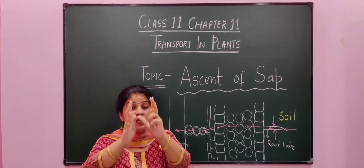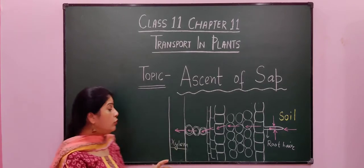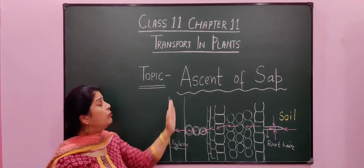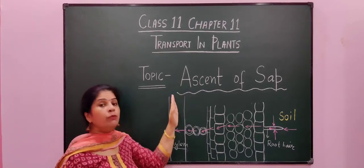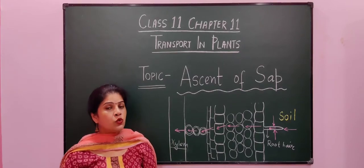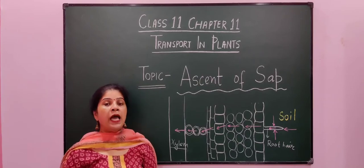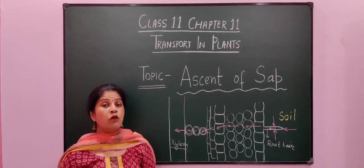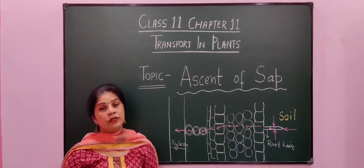This water present in the root hairs will move through various pathways like apoplast pathway or symplast pathway and it will reach up to the xylem. It will move through various cells like cortex cells, endodermic cells, pericycle cells and then reach the xylem part of the roots. This movement of water from the soil solution into the xylem of the roots is known as absorption of water. Now long distance transport of water will take place — the water in the lower part of the plant body will move upward. This upward movement of water is known as ascent of sap, and today's topic is ascent of sap.